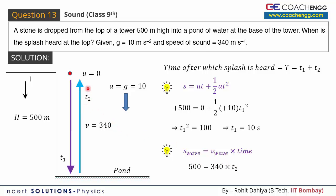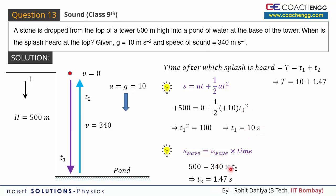T2 की value आएगी 1.47 seconds. Total time = T1 + T2 = 10 + 1.47 = 11.47 seconds. यही हमारा required answer है।